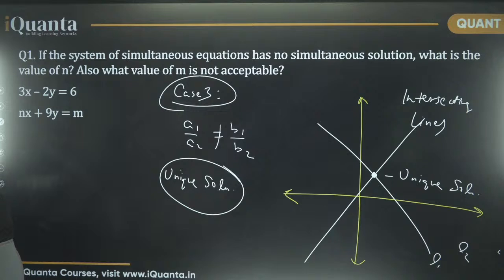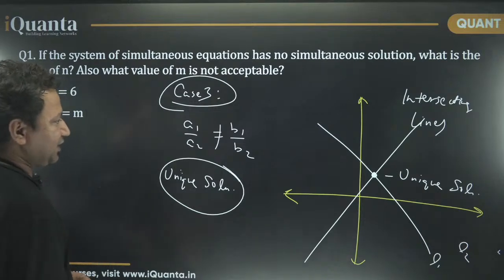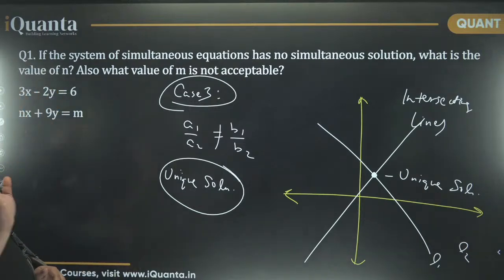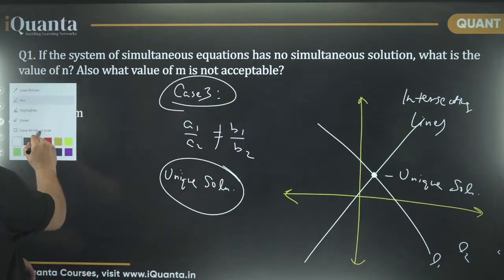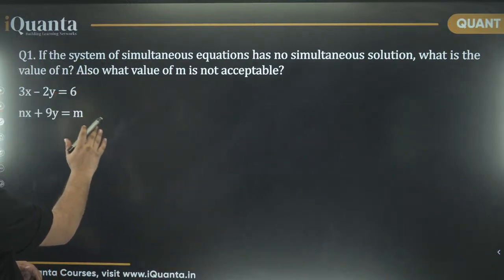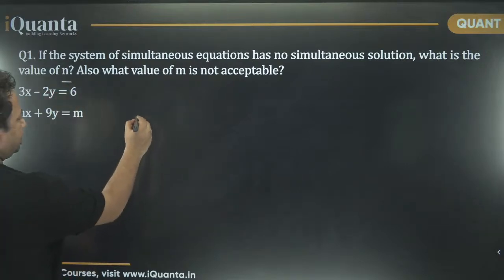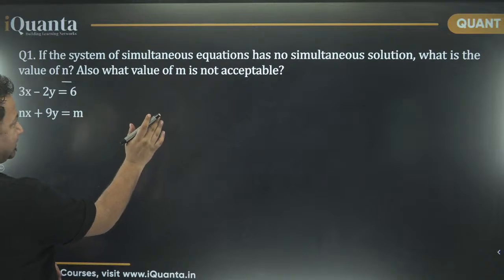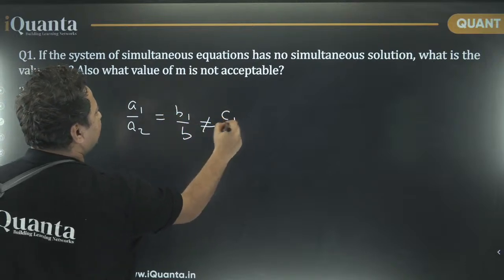All of you got that? And now, we can solve the question of course. Also, try to make the entire notes of this session so that if you want to have a quick revision, you can just go there. The question says, has no solution? No solution. What is the value of N? No solution in any case? When lines are parallel, right? Lines are parallel. That means, A1 upon A2 is equal to B1 upon B2 is not equal to C1 upon C2.